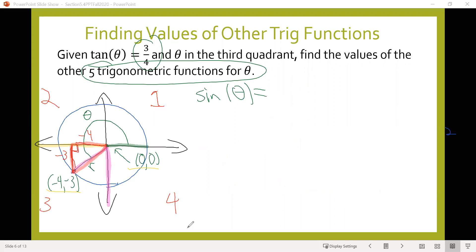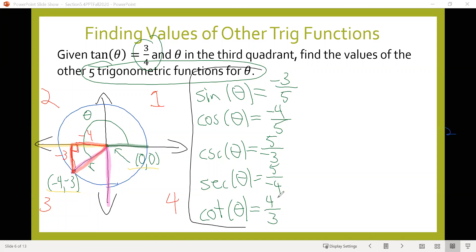Okay, so sine of theta equals negative 3 over 5. Cosine of theta equals negative 4 over 5. Cosecant of theta equals negative 5-thirds. Secant of theta equals negative 5-fourths. And cotangent of theta equals positive 4-thirds. There we have our answers.